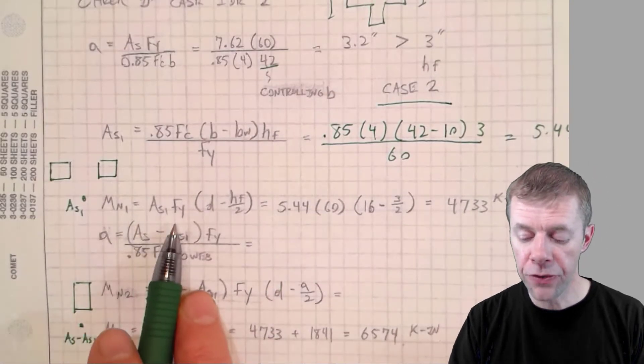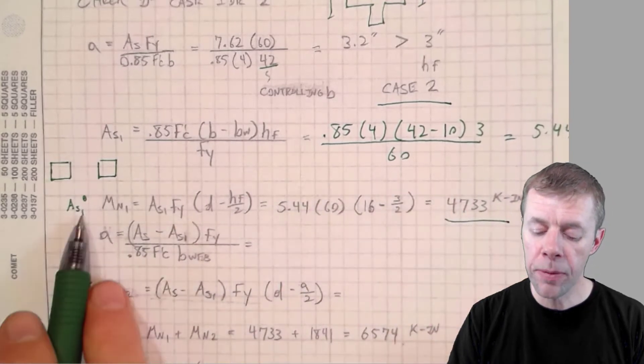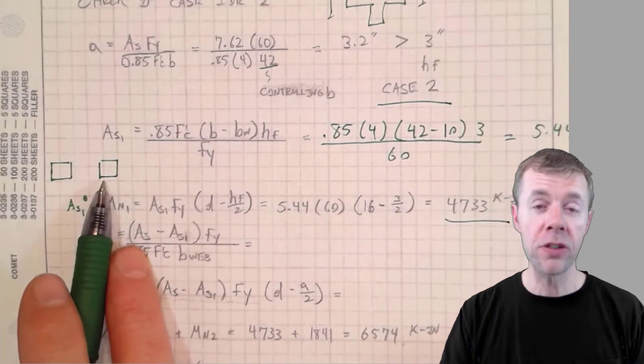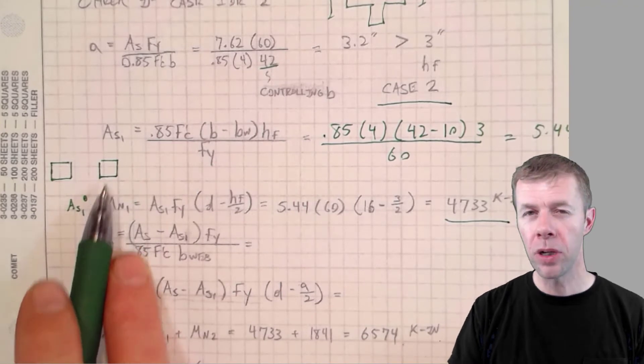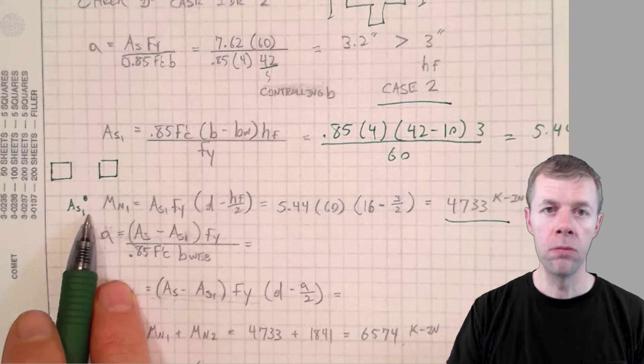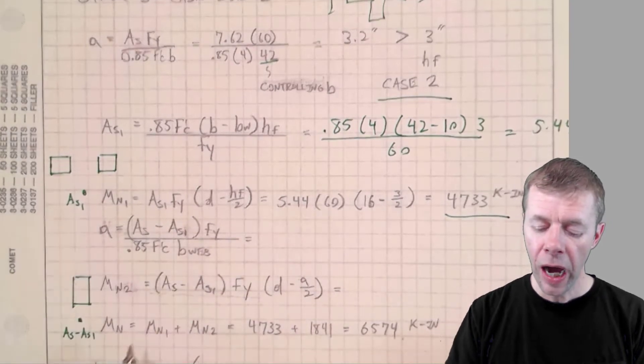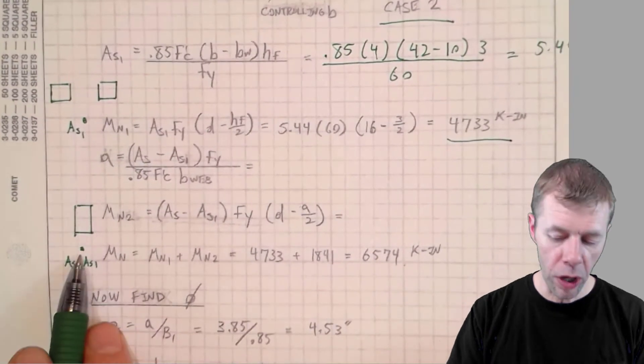Now I can plug into this equation and I can find how much moment that was contributed by just the stuff outside of the web plus some of the steel. Am I done? No. I got more steel and I got the stuff in the middle. I got the stuff in the middle and I got more steel.